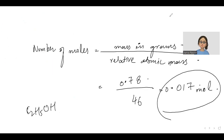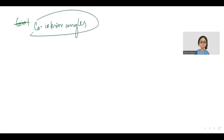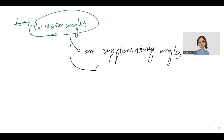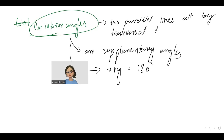The next angle that we are going to understand are co-interior angles. Co-interior angles are basically supplementary angles — they add up to give us 180 degrees. When two parallel lines are cut by a transversal, two pairs of co-interior angles are formed.